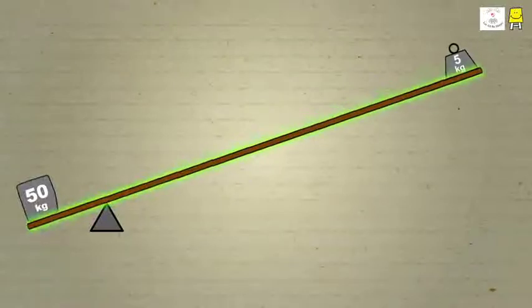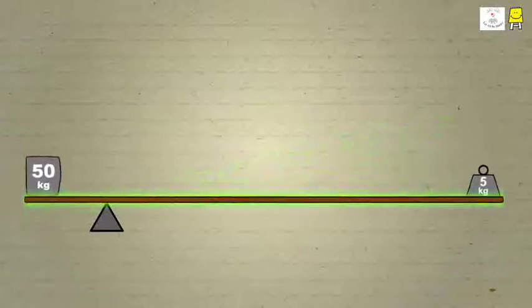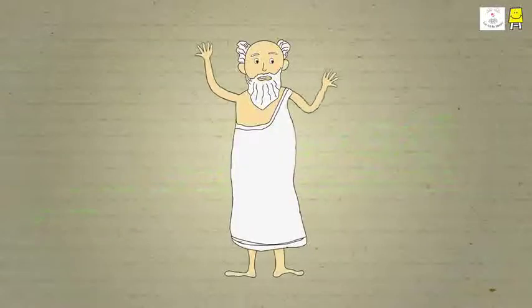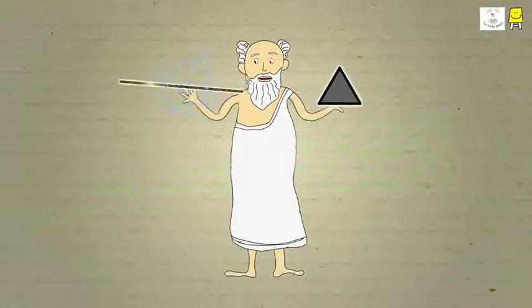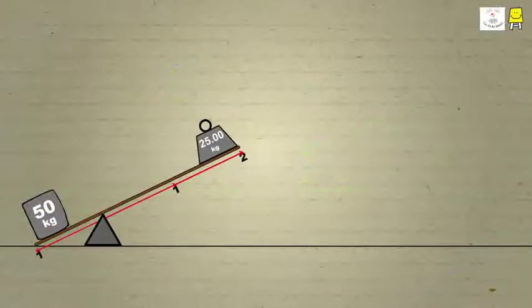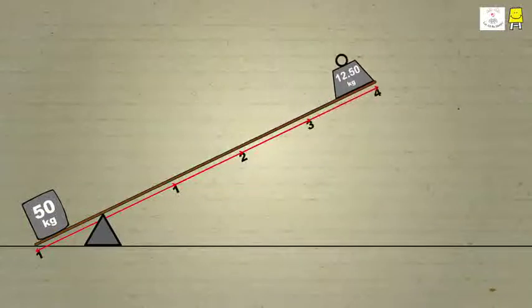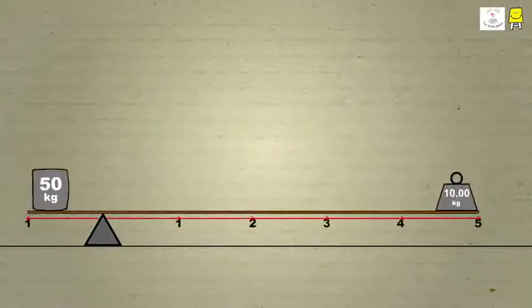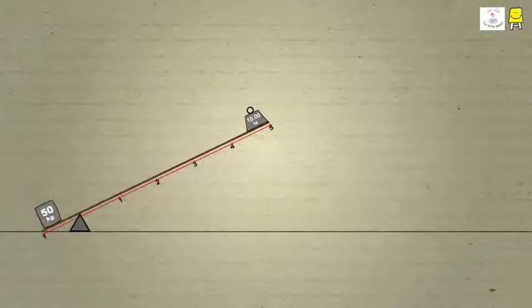Archimedes then explained that if we use seesaw-like levers, heavier loads can be lifted easily using less effort. This requires a support or a fulcrum and a plank. The longer the effort arm is in proportion to the load arm, greater will be the mechanical advantage.